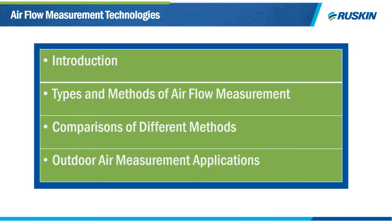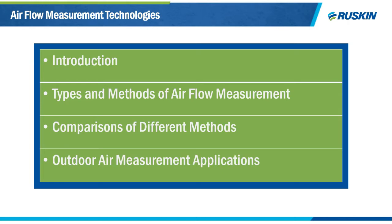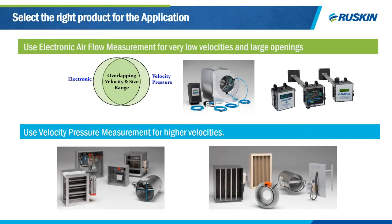Thank you, Ray. I'm Glenn Esser, and I've been asked to talk about types and methods of air measurement, comparison of different methods, and various outdoor air measurement applications, which as Ray explained are some of the most challenging. Selecting the right product for the application is key to success. Electronic or properly applied velocity pressure air measurement devices can be equally accurate. In general, electronic works best for lower velocities and large openings, and velocity pressure or electronic can either be applied for higher velocity applications.